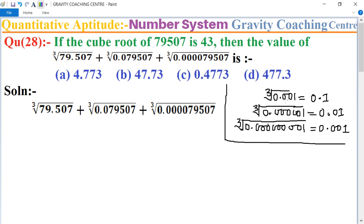If the cube root of 0.001 is 0.1, and here the cube root of 79507 is 43.